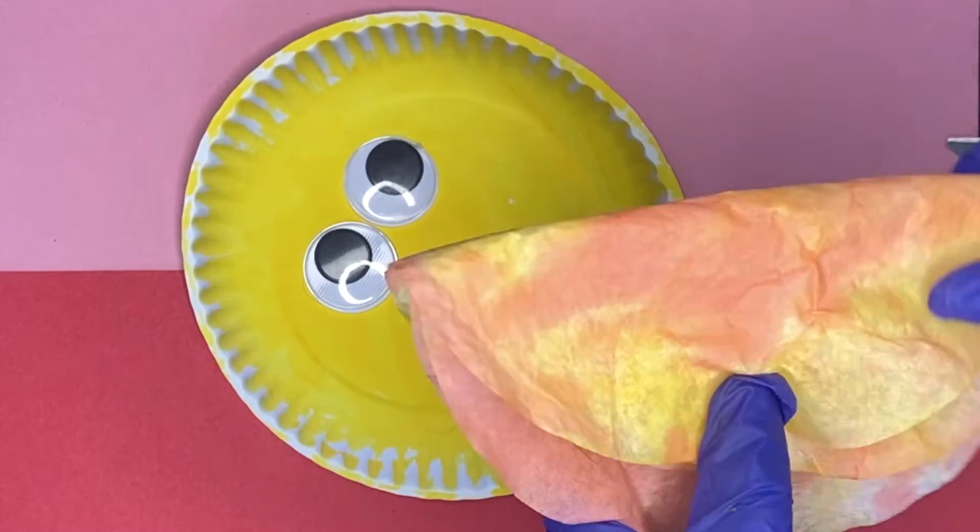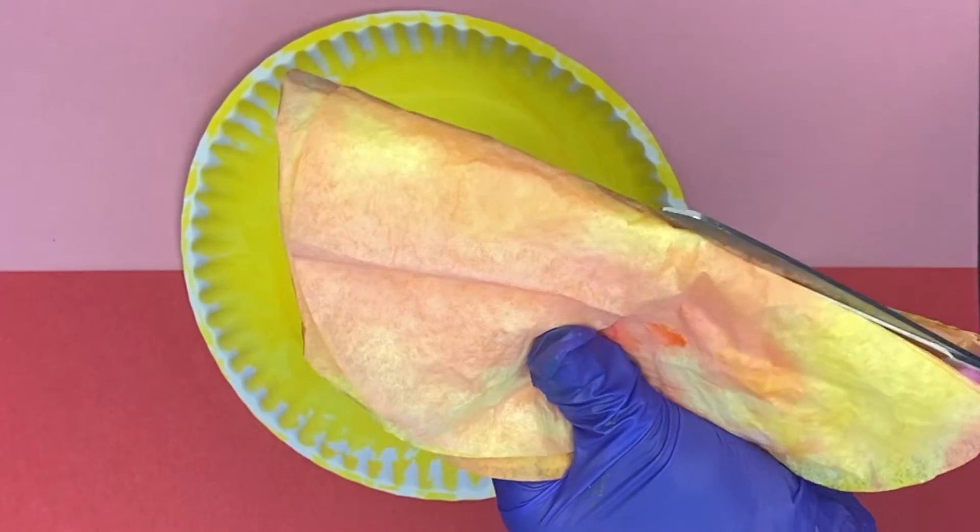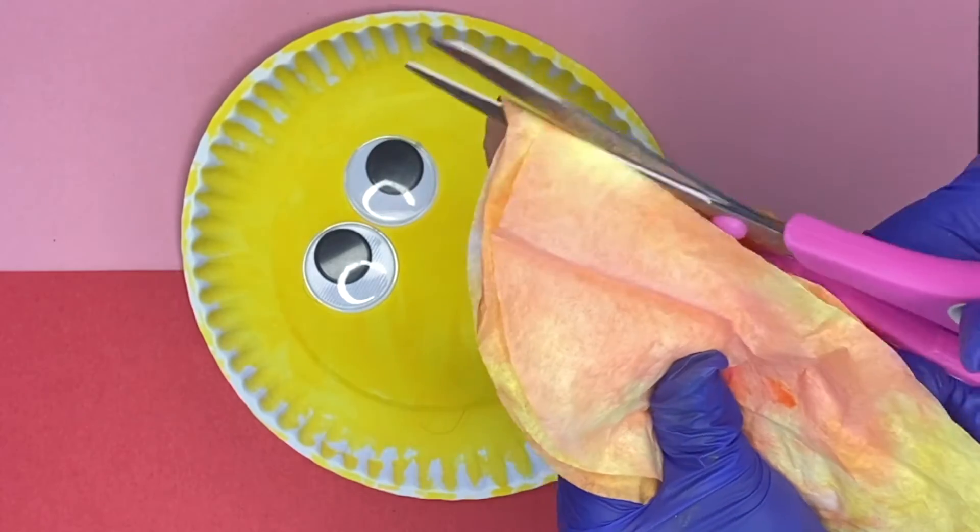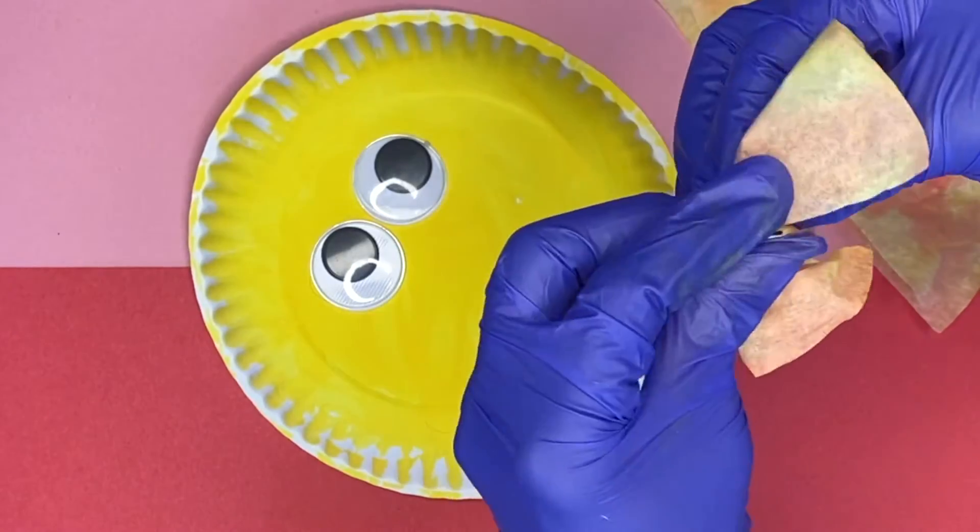So go ahead and take those filters, fold it in half like this, and I'm just going to cut them in half. That way I can use the filters to go all around the plate. Now grab your stapler because it's going to be an easy attachment here.